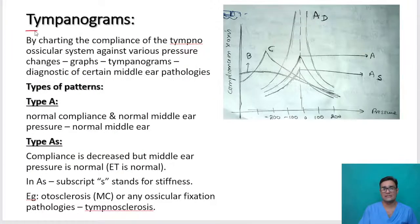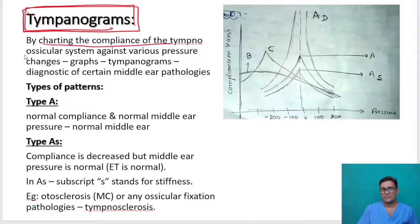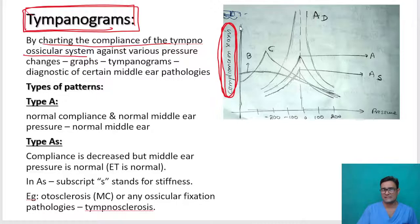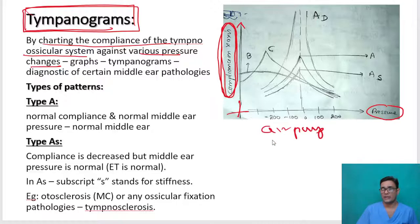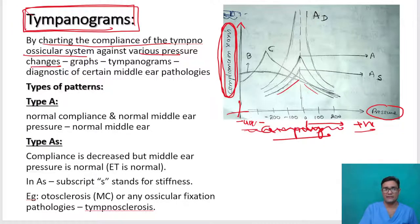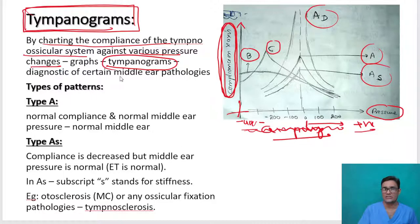This is the tympanogram. By charting the compliance of the tympano-ossicular system on the x-axis against the various pressure changes brought about by the air pump — from negative to normal and then to positive — whatever graphs we get are called tympanograms. These tympanograms are diagnostic of certain middle ear pathologies.